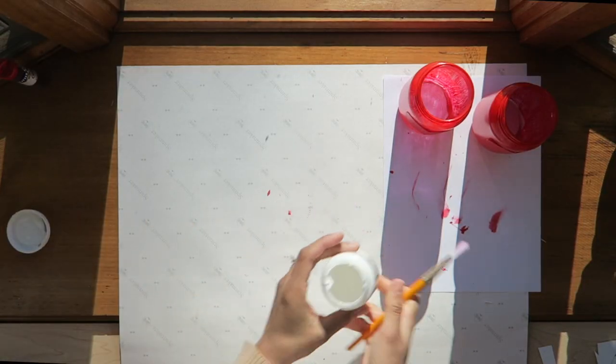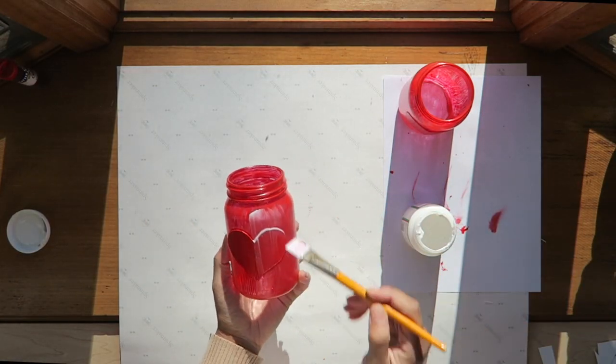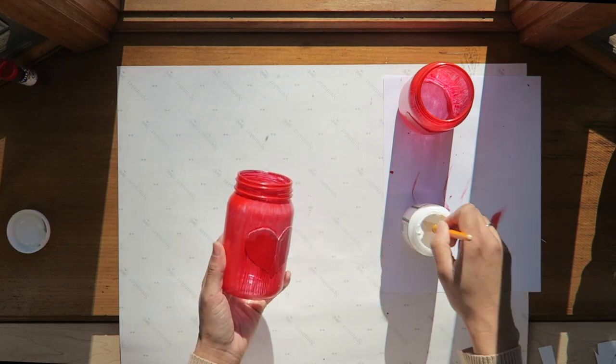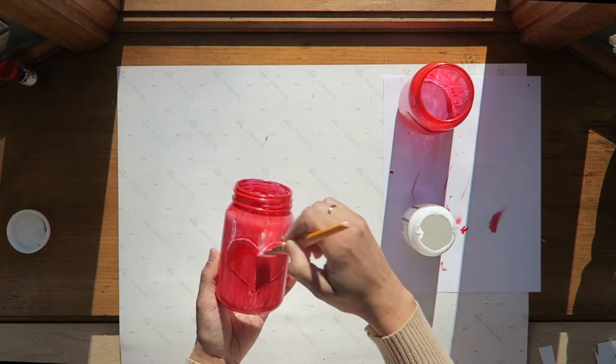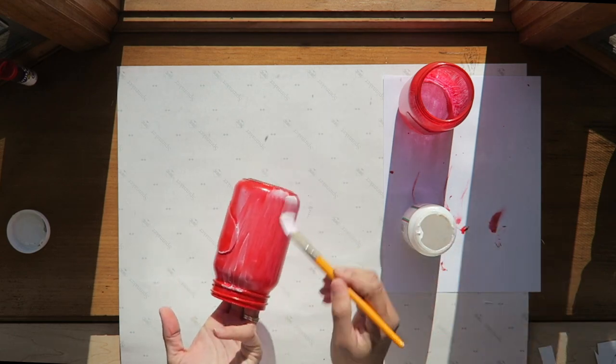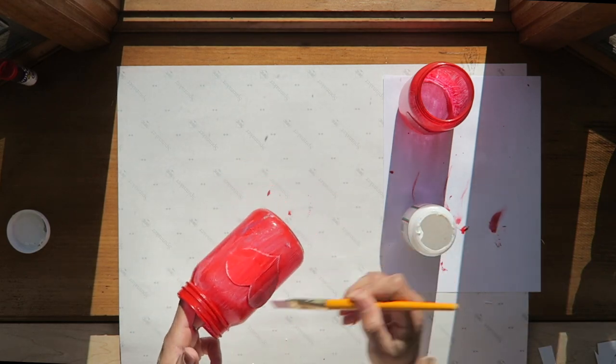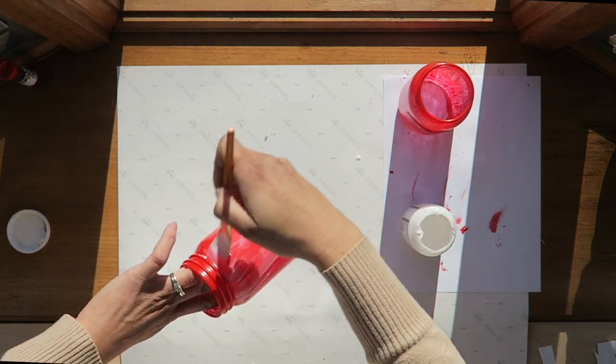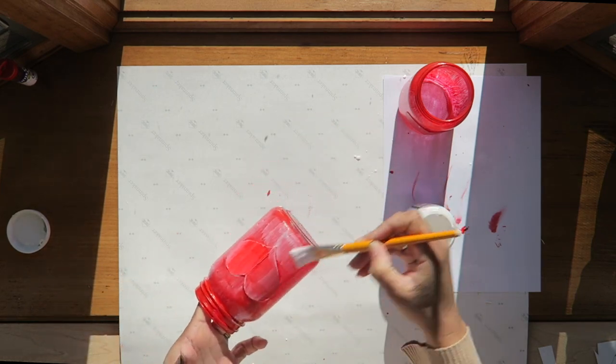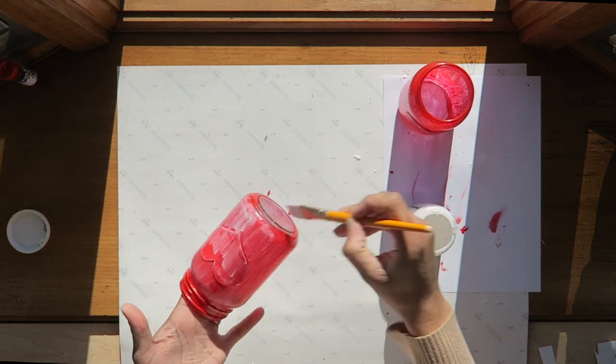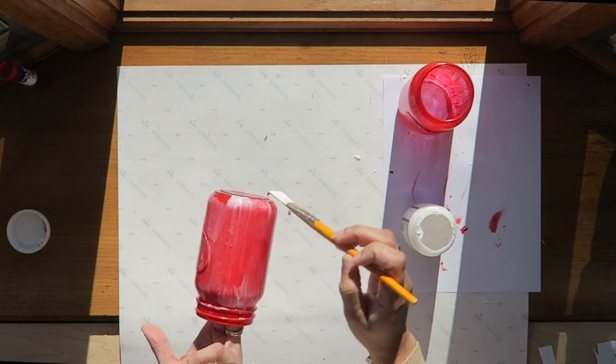I waited about a half an hour for the jars to dry, and then I just covered everything with the Mod Podge. I immediately followed this up with the red glitter.